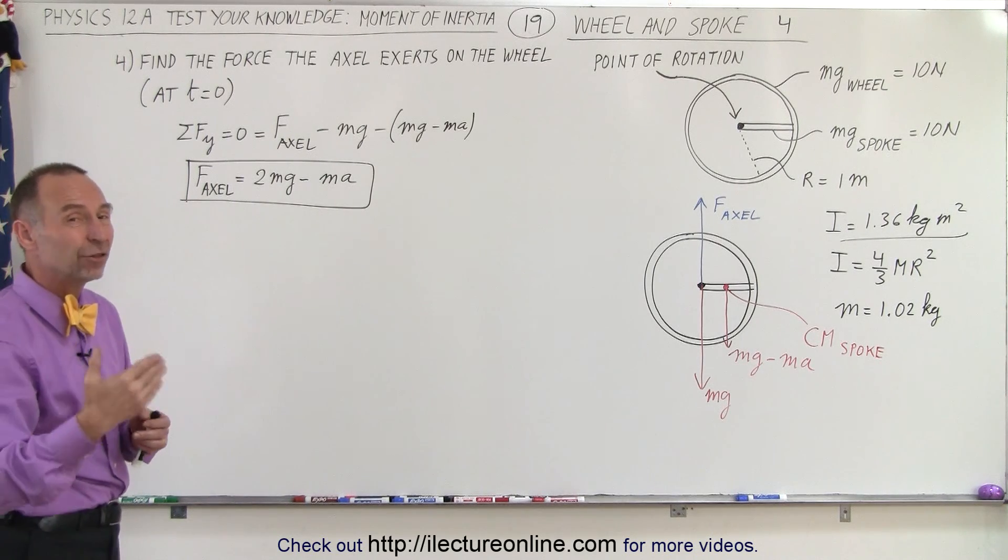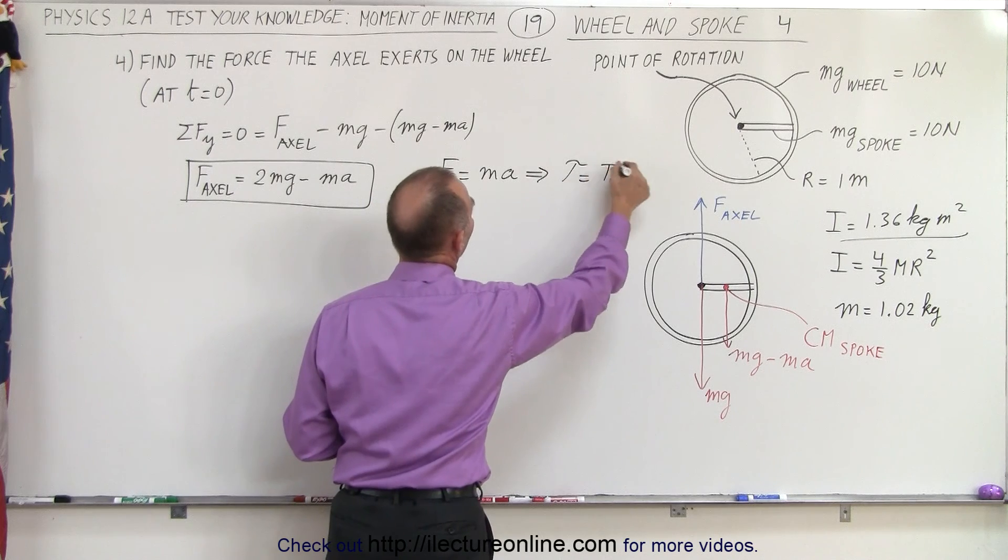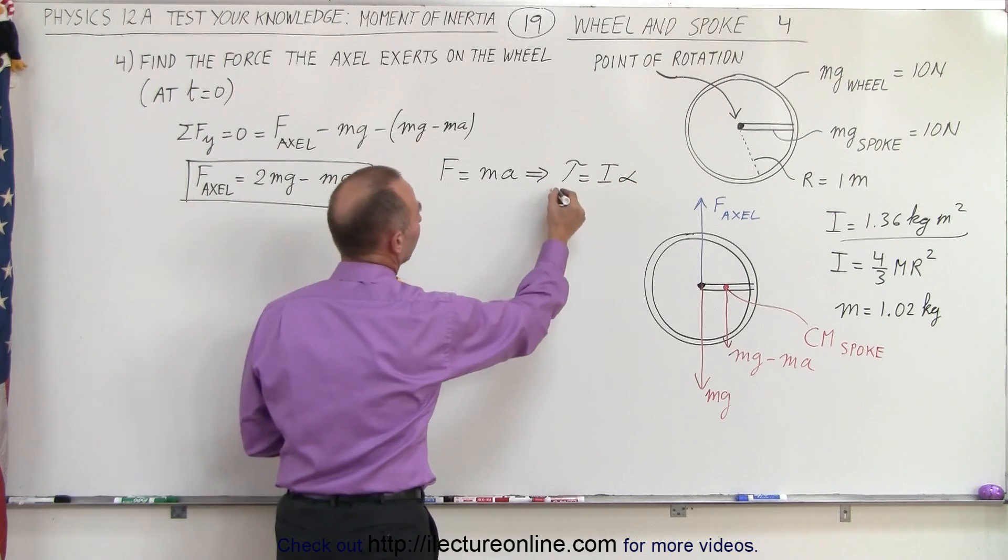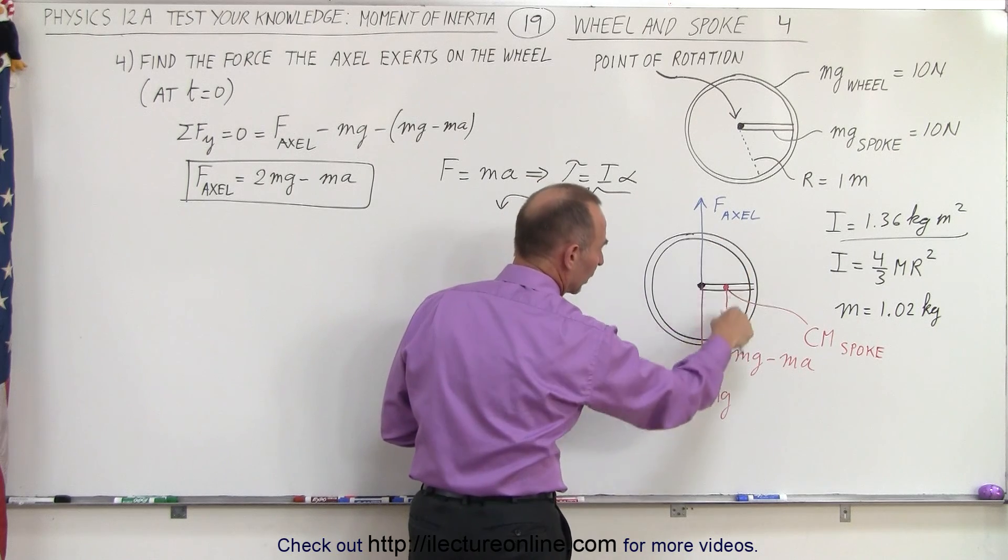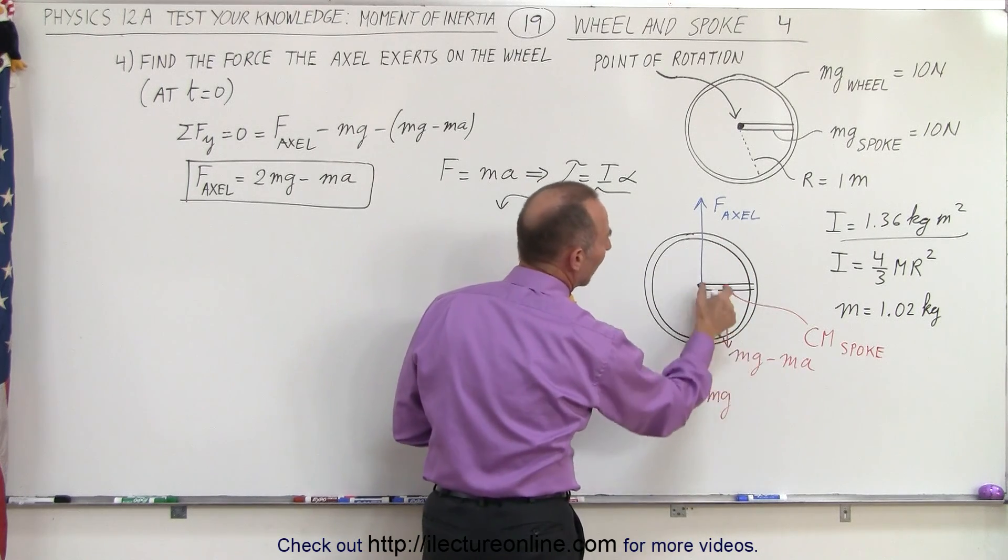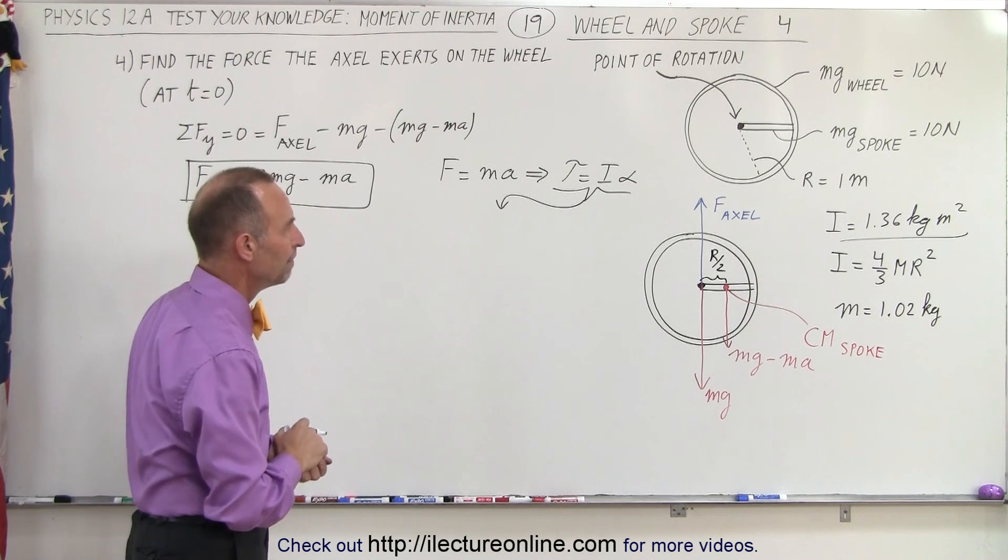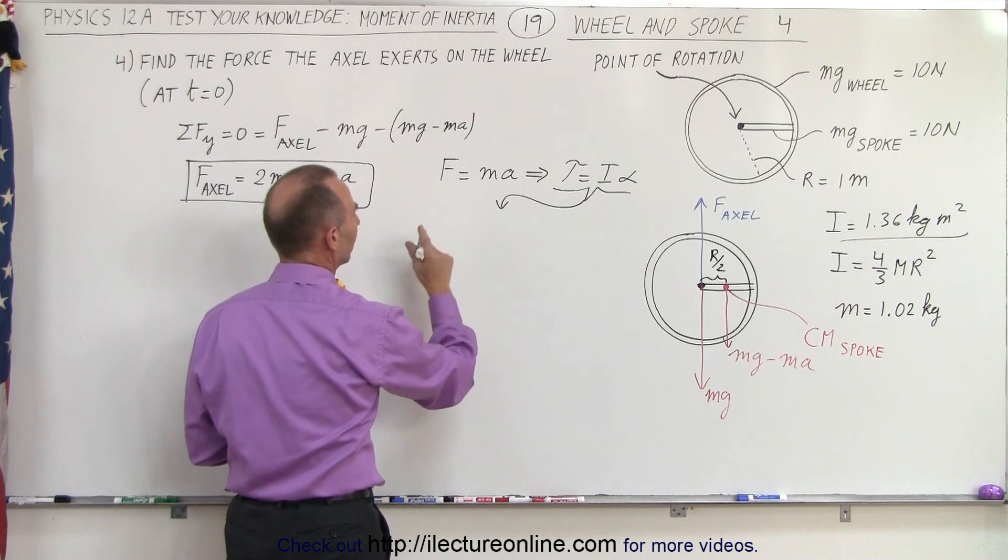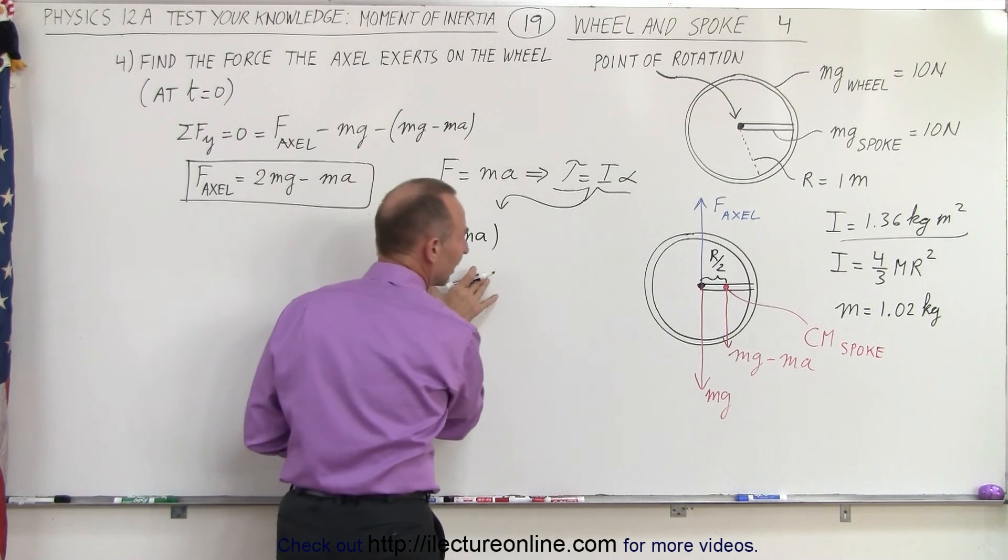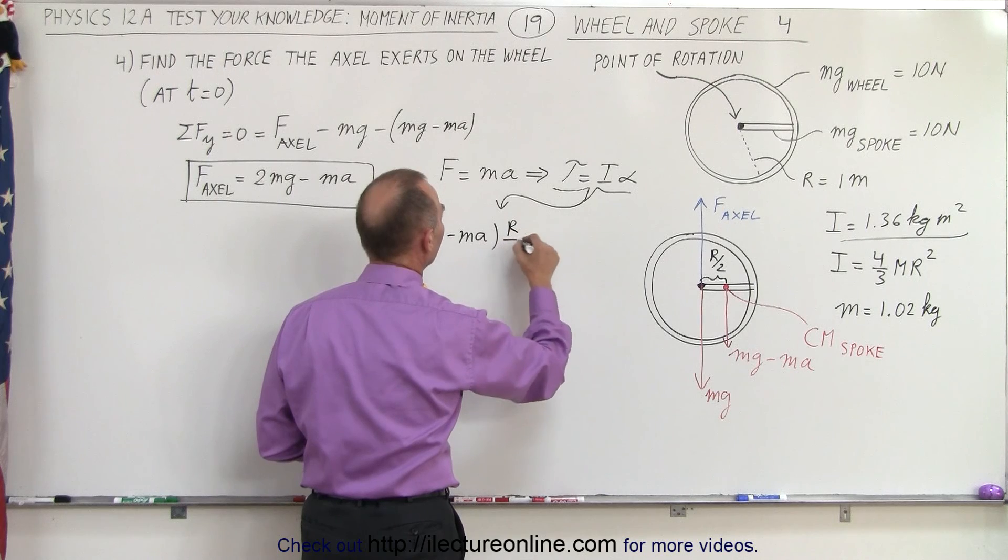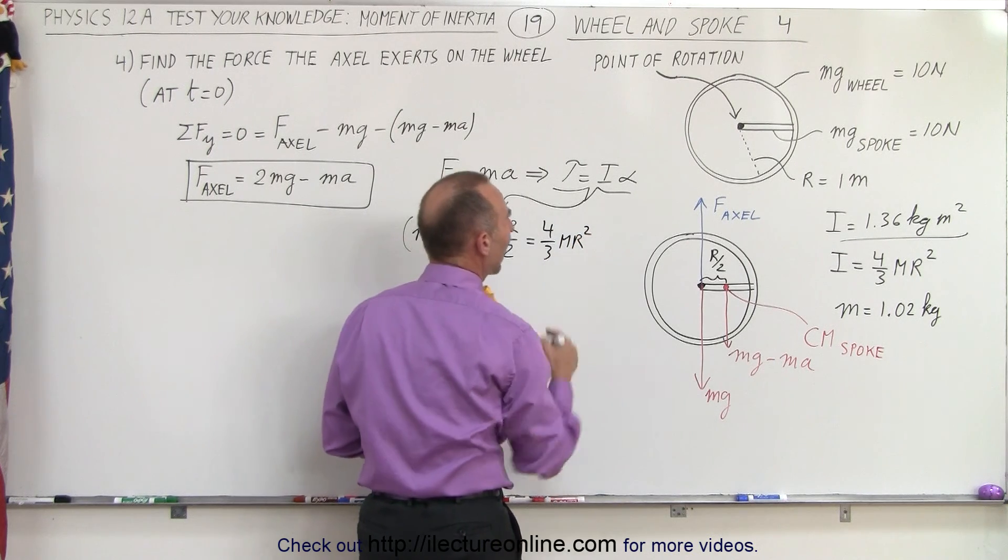Well, we use the rotational equivalent of ma. So instead of F equals ma, we're going to write torque equals I times alpha. And so, if we then take this equation and bring it down here, the torque is applied by the weight of the rod pulling down, not just the weight, but of course mg minus ma, acting through the perpendicular distance of the radius divided by 2. So that means that the torque is equal to mg minus ma, that's the tension of the force, multiplied times the distance, which is r divided by 2. And that equals the moment of inertia, which is 4/3 mr squared, times the angular acceleration.